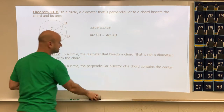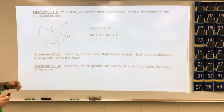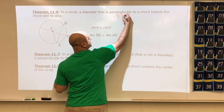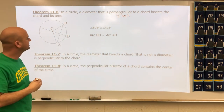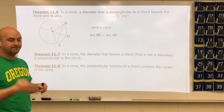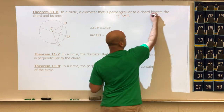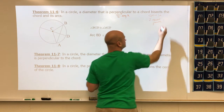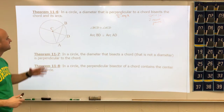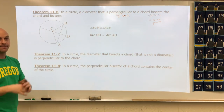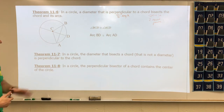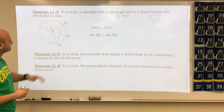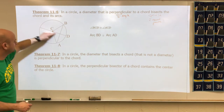A new theorem: in a circle, a diameter that is perpendicular — meaning at a 90-degree angle — to a chord bisects the chord. Bisect means split into two equal parts. So here, a diameter perpendicular to a chord bisects both the chord and its arc.